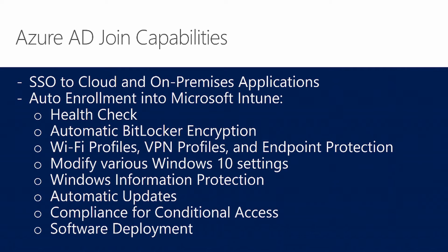Azure AD Join also allows you to enroll into Intune, and by enrolling into Intune, automatically you can have items like health check, automatic BitLocker encryption. You can push down Wi-Fi profiles, VPN profiles, and enforce endpoint protection. Windows Information Protection is a brand new technology that allows you to protect applications within the Windows 10 operating system — for example, separate policies to protect data within Microsoft Word, Outlook, PowerPoint, etc. You can enforce automatic updates, leverage conditional access, and even deploy software such as MSI files.